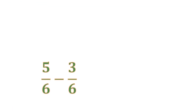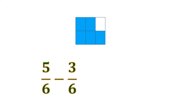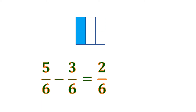Another example: we have 5 sixths minus 3 sixths. Let us visualize this. We have 5 shaded parts out of 6, and we want to remove 3 shaded parts out of 6. What's left is 2 shaded parts, or 2 sixths. But if we remove some slices, it would look like this — 2 sixths can be reduced into 1 third. The difference between 5 sixths and 3 sixths is 1 third.